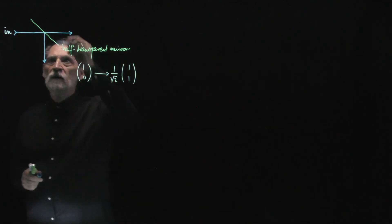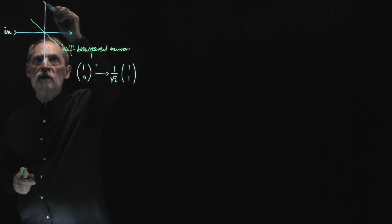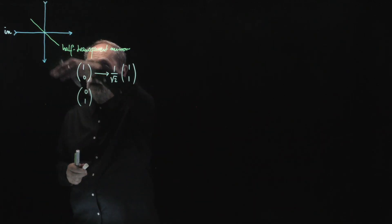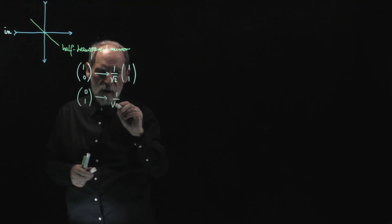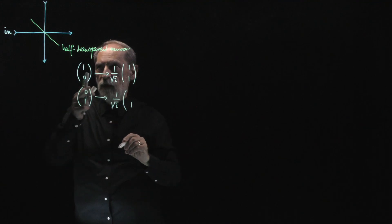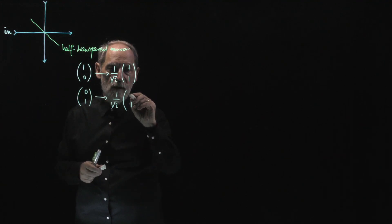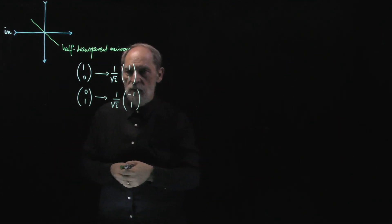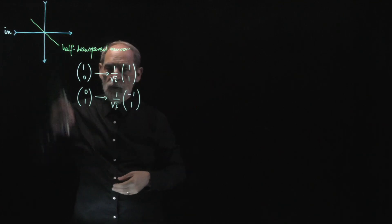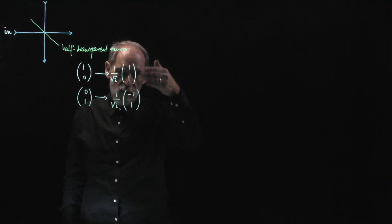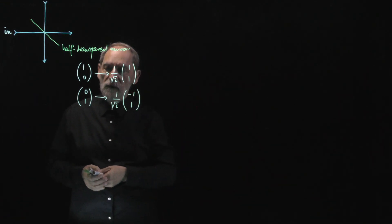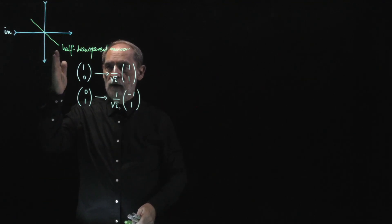A photon could also arrive in the downward direction, described by a column vector of zero, one — just moving downwards. As it emerges, it will have equal probability of transmission and reflection. Transmission means moving downwards and reflection means moving to the right. We need a minus sign for one of these two probability amplitudes, because on the arriving side we have two orthogonal columns, and having a unitary process happening at the mirror, we also need orthogonal columns on the departing side.